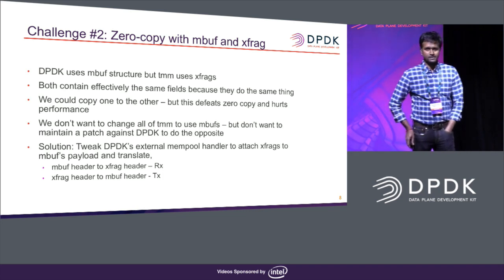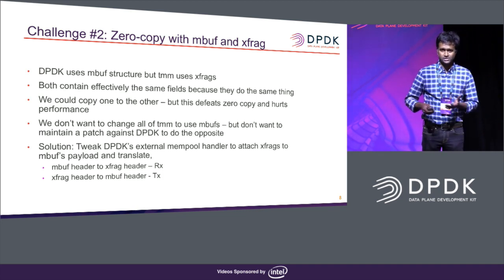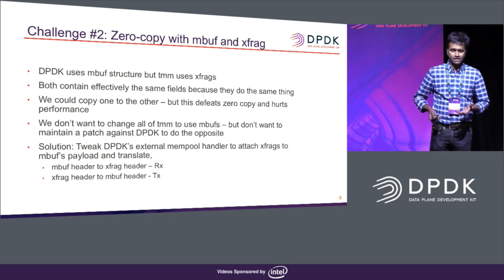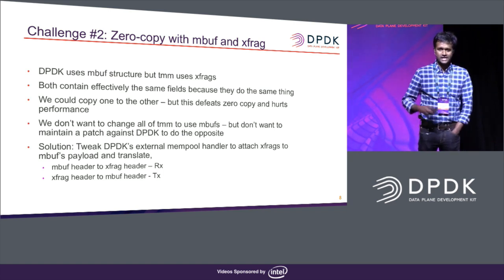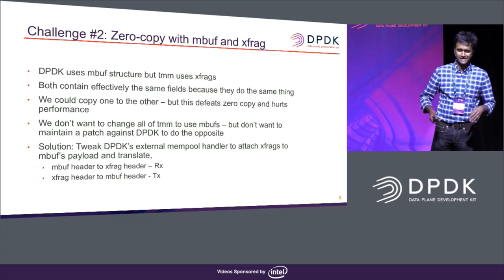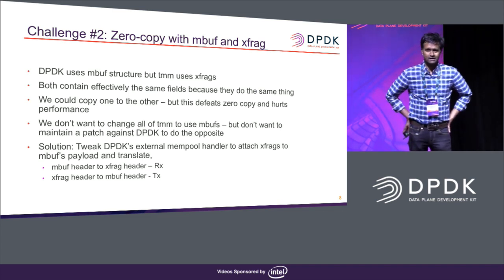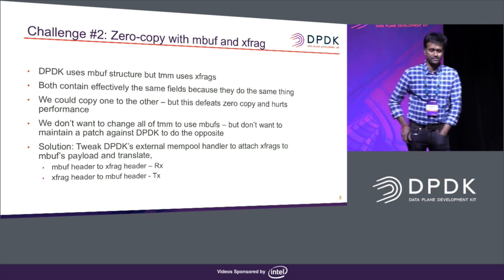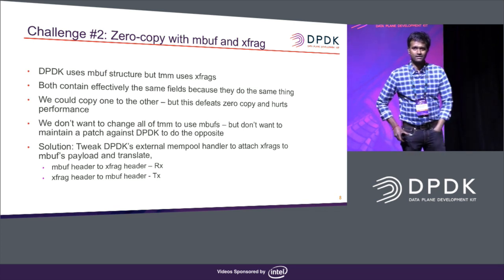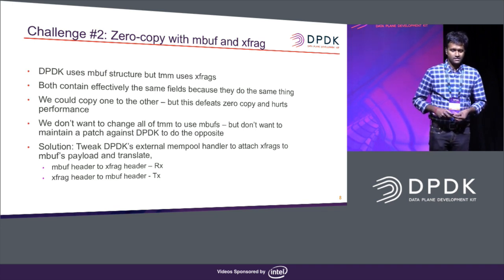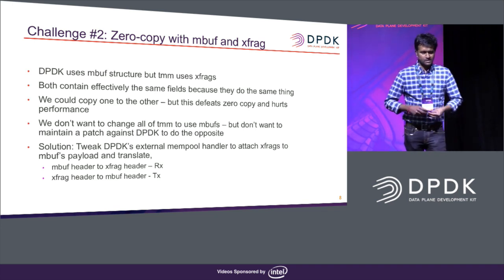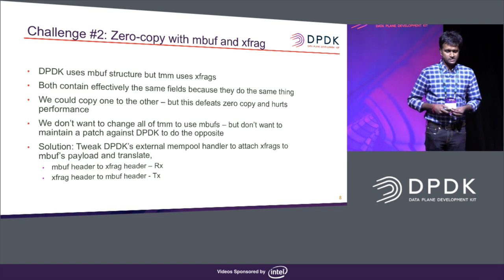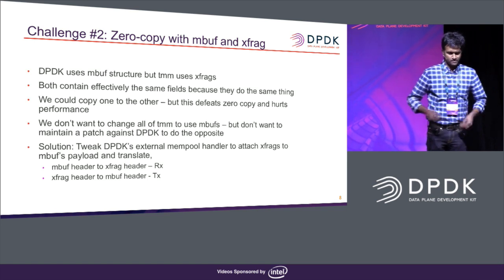We implemented this in DPDK and later found that 18.05 has an experimental implementation for this. Since it's experimental, we haven't decided whether to go with our approach or the new one. That's pretty much the zero copy challenge.